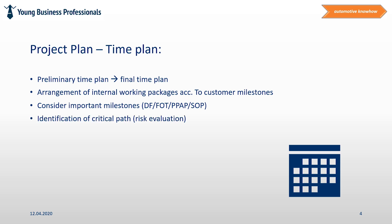It is useful for the project manager to analyze the time plan with regard to the critical path. The critical path is a chain of working packages or activities during the project where, if one single step in this chain is delayed, the rest of the activities inside this chain will delay accordingly. So we are talking about the most sensitive activities of the project with regard to delays — a kind of risk analysis that helps the project manager understand priorities.